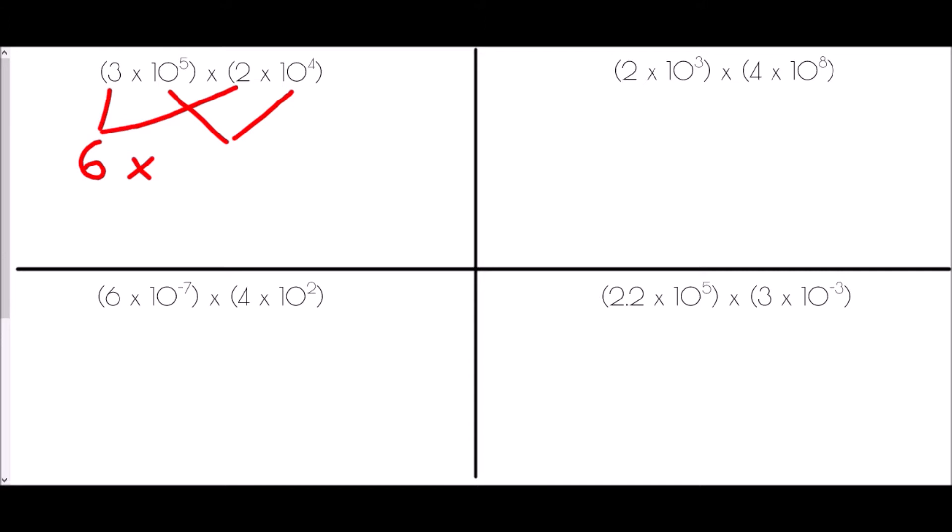Now for the 10 to the power of 5 times 10 to the power of 4, this is where our laws of indices come in. When we multiply with powers, the rule is that we add those powers together. So 10 to the power of 5 times 10 to the power of 4 gives us 10 to the power of 9. Our answer is 6 times 10 to the power of 9.